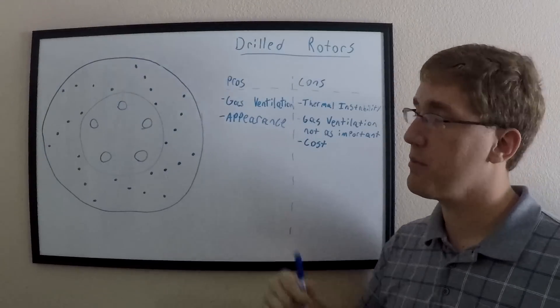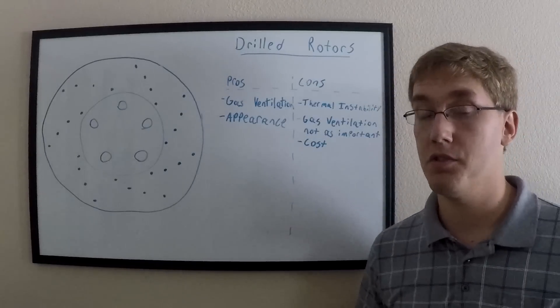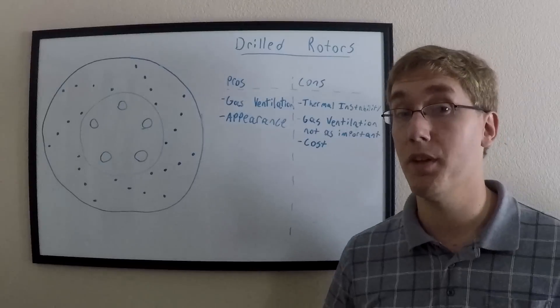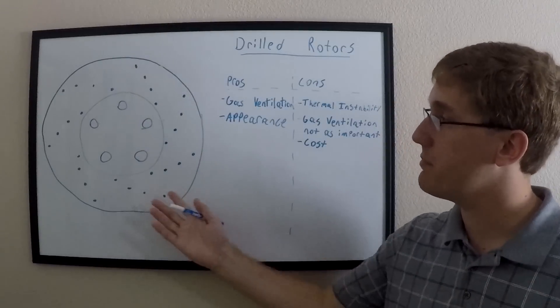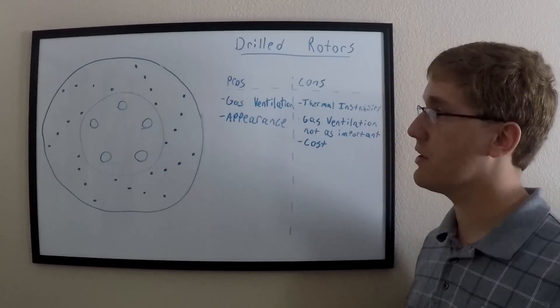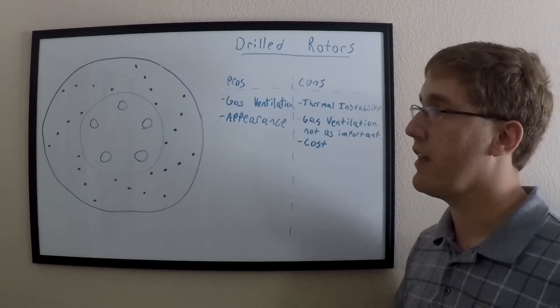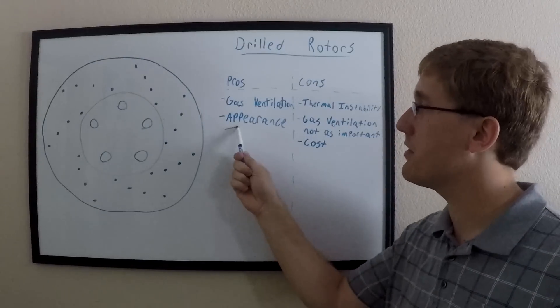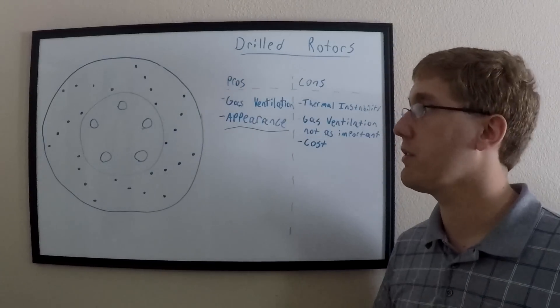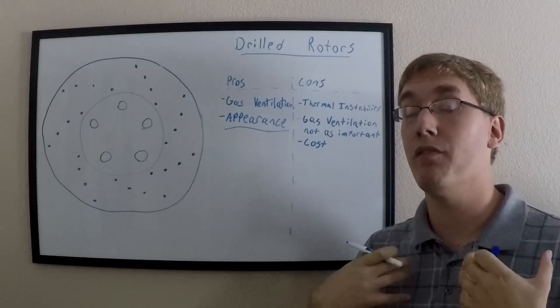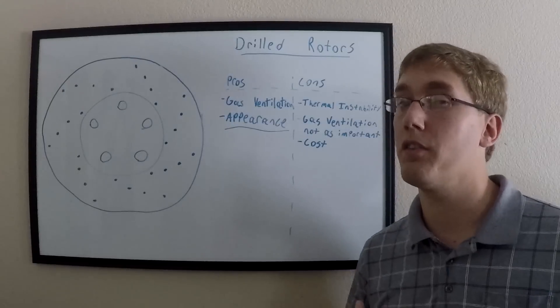Nowadays, ventilating gases through these holes isn't really as important because we use ceramic pads instead of asbestos pads, and the ceramic pads don't generate as much gas. The other downside of these is of course the cost. Because you're adding another manufacturing step to be able to drill holes through the rotor, it means that you're going to drive up the cost. So why would anybody want to buy these sort of drilled rotors here? It's mainly an appearance and marketing thing. Drilled rotors of course look really cool, but they really just don't have any functional purpose anymore.